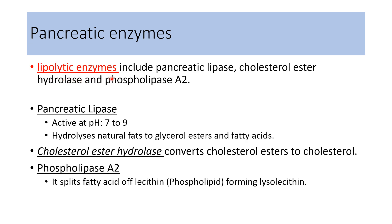Various lipolytic enzymes in pancreatic juice are pancreatic lipase, cholesterol ester hydrolase, and phospholipase A2. Pancreatic lipase is active at pH 7 to 9 and hydrolyzes natural fats to glycerol esters and fatty acids. Cholesterol ester hydrolase converts cholesterol ester to cholesterol. Phospholipase A2 is secreted in the inactive form and is converted to the active form by trypsin. It splits fatty acid from lecithin, forming lysolecithin, which produces damage to cell membranes. In conditions like acute pancreatitis, activation of phospholipase A2 gradually produces more damage to cell membranes in the pancreas.